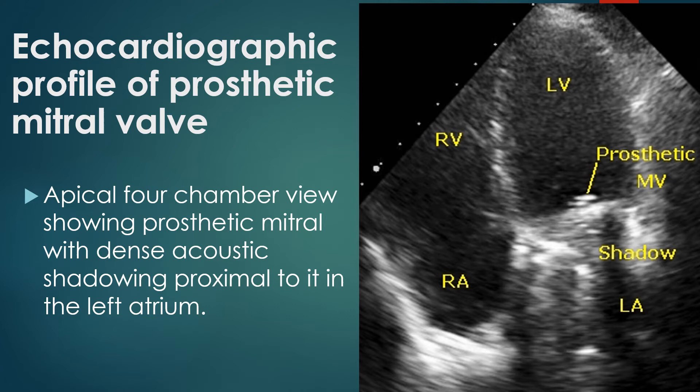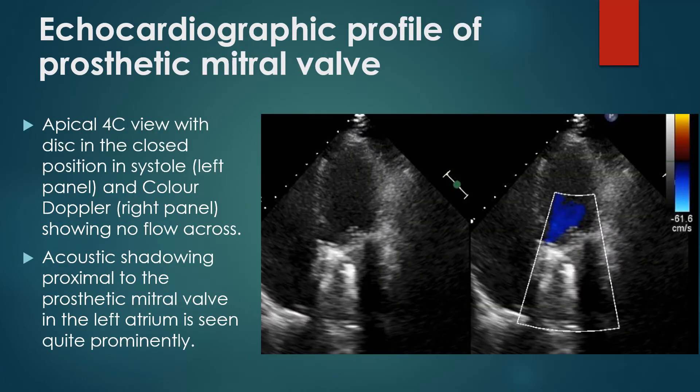The apical 4-chamber view shows the prosthetic mitral valve with dense acoustic shadowing proximally in the left atrium. The prosthetic mitral disc in the closed position in systole is seen in the left panel, and the colour Doppler image in the right panel shows no flow across the mitral valve. The blue colour in the left ventricle is the left ventricular outflow, which is directed away from the apical transducer and hence coded blue. Acoustic shadowing proximal to the prosthetic mitral valve in the left atrium is seen quite prominently.